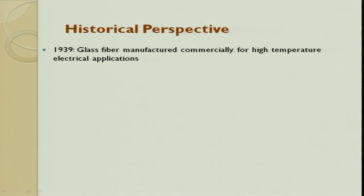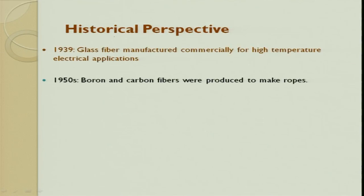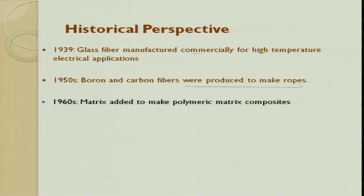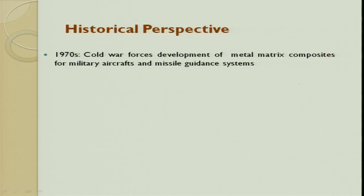From the historic perspective — coming to AD — in 1939, glass fiber manufacturing came into commercial application for high temperature electrical applications. Then in 1950, boron and carbon fibers were produced for making ropes. Then in 1960, matrix was added to make a polymer matrix composite.